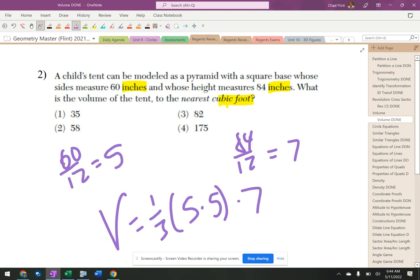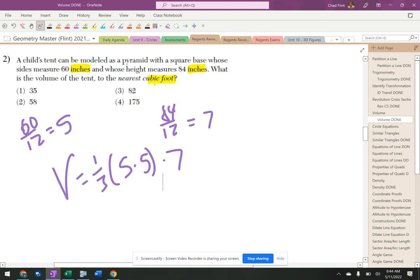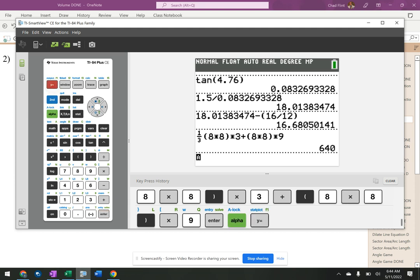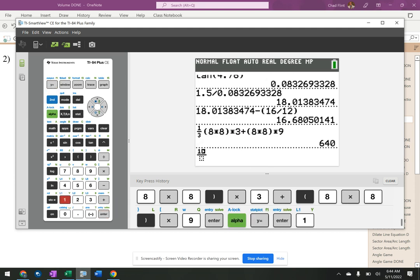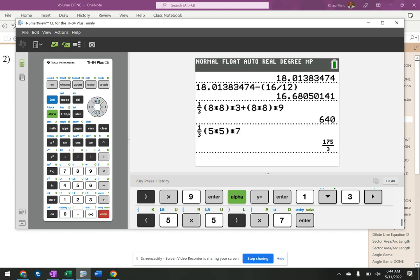All right, times the height which is 7. Okay, so again we got some conversions going on. We get out of the formula, but other than that it's just putting it into my calculator. One-third times 5 times 5 times 7 is 175 over 3.